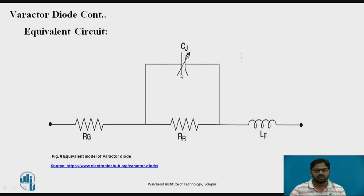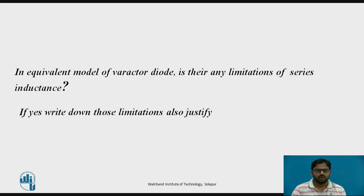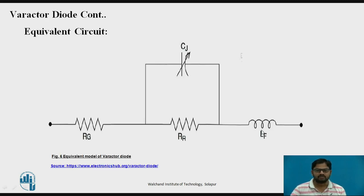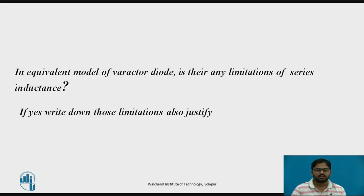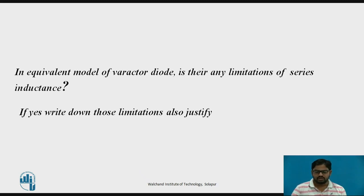In the equivalent circuit of the Varactor Diode, there is a junction capacitance under reverse bias, a bulk resistance due to the material, and a reverse resistance that increases as reverse bias increases. There is also a series lead inductance. An interesting question for consideration is: what is the limitation introduced by this series inductance for high frequency applications? Think about it and write down your answer with justification.